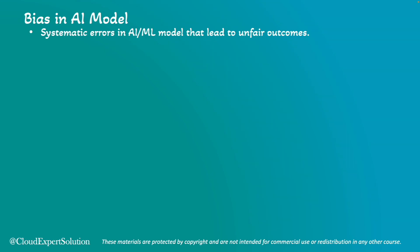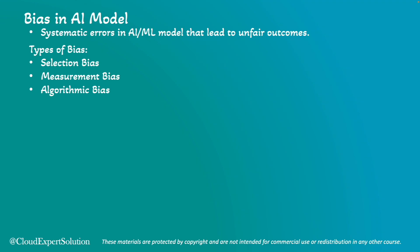Bias in machine learning refers to systemic errors that lead to unfair outcomes. There are three types of bias: selection bias, measurement bias, and algorithmic bias. Selection bias occurs when the sample dataset used to train a model is not representative of the population it's meant to serve, leading to skewed results and poor generalization.